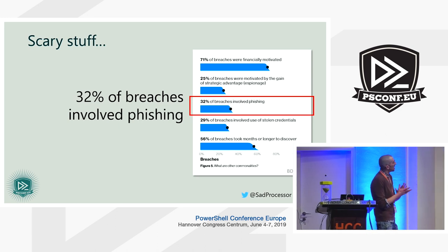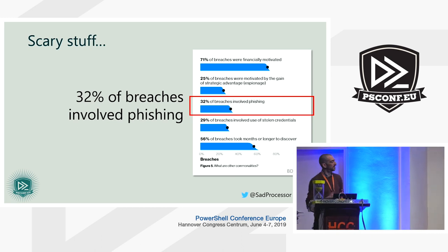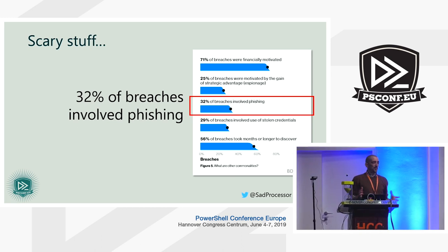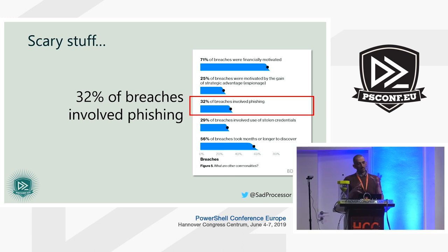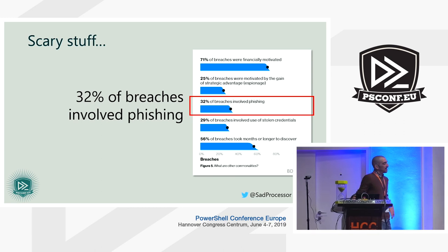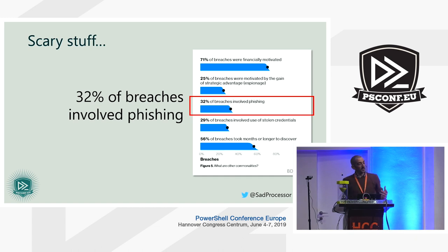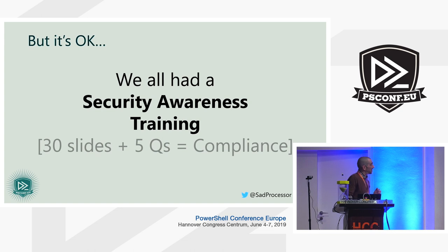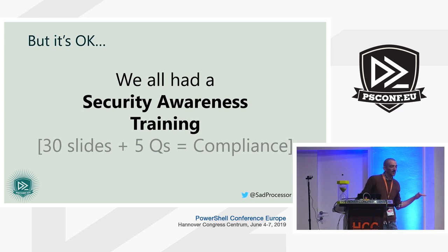This is a statistic out of the Data Breach Investigation Report — a report made every year by Verizon that summarizes all the findings of breaches and crunches them into numbers. Here we see simply that 32% of breaches involve phishing, so you, me, everybody as a user can be targeted. The good thing is we all get security awareness training, right? So I guess you all get your one-hour PowerPoint and five questions to answer and we're sorted against phishing.